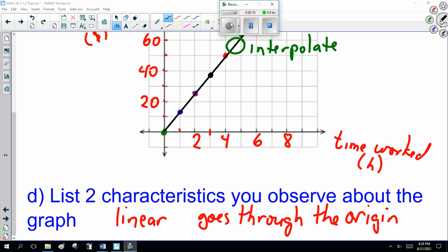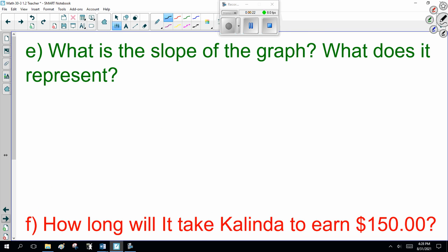Working with Linear Relations. Now we've worked on this graph. I just pointed out it's linear and goes through the origin, so that's two characteristics you should note. Now the other two questions, the last two for this one.